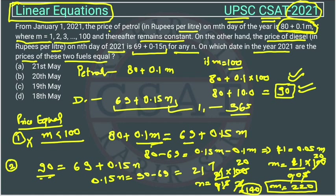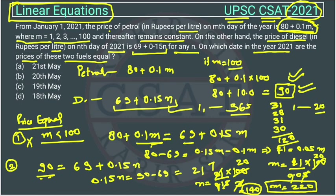But the question is asking for the exact date. In January we have 31 days, in February we have 28 days, in March 31 days, and in April 30 days. The total comes to 120 days. We need 20 more days. So from May 1st, counting 20 days, we reach May 20th. On May 20th, the price of both commodities will be equal.